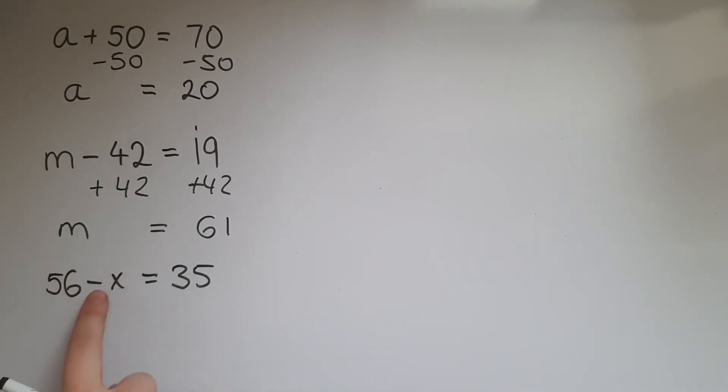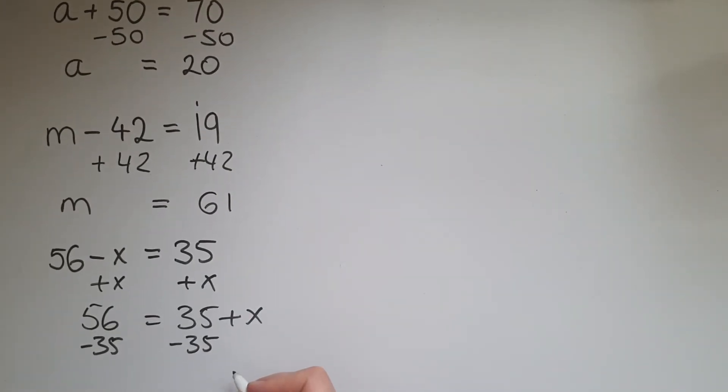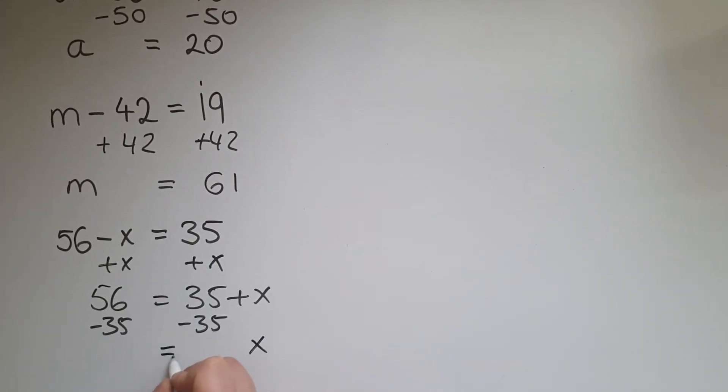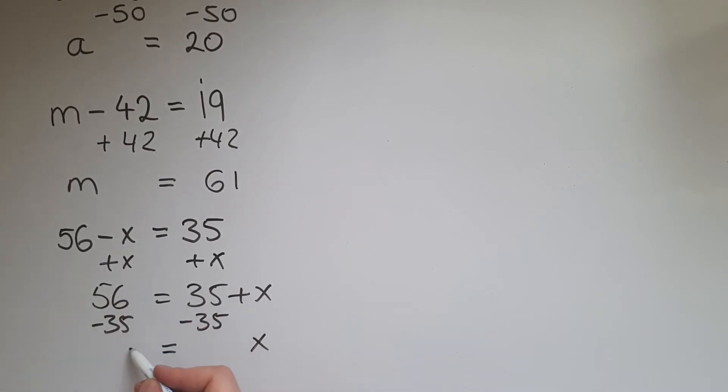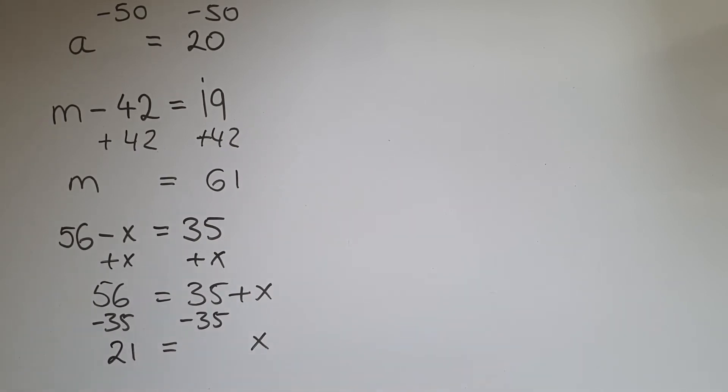Now there are different ways I can solve this, but what I'm going to do is I'm going to take this negative x into this side to make it a positive one. So I'm going to add x on both sides. So I have 56 on this side and then 35 plus x on this side. I just want to have x on its own, so I'm going to get rid of the 35. So I'm going to take away 35 here and 35 here, so I end up with x. And on this side, 6 take away 5 is 1, 5 take away 3 is 2, so x is 21 pounds.